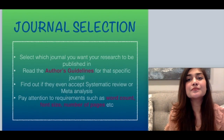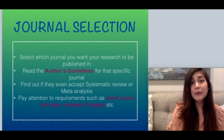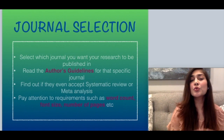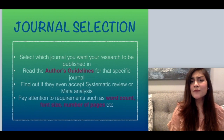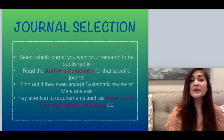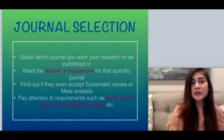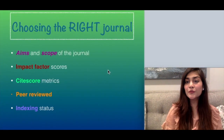Next is journal selection. Select which journal you want your research article to be published in, then go to the website of that journal and read the author's guidelines. Find out if they even accept systematic review or meta-analysis, because not every journal does. Pay specific attention to requirements such as word count, font size, and number of pages.